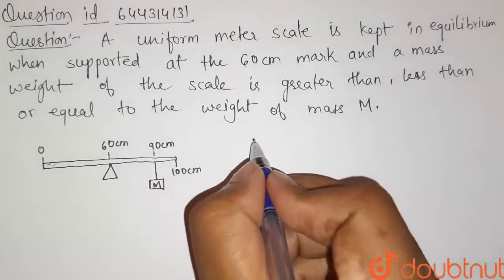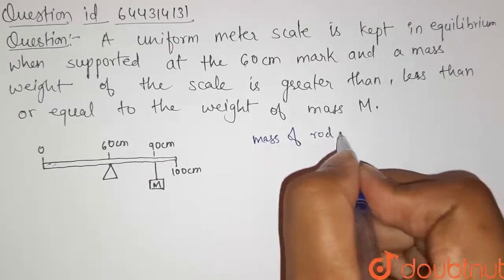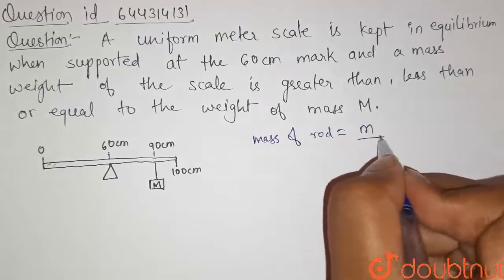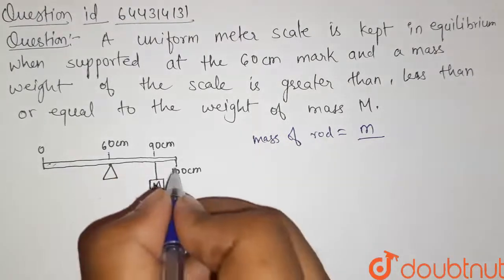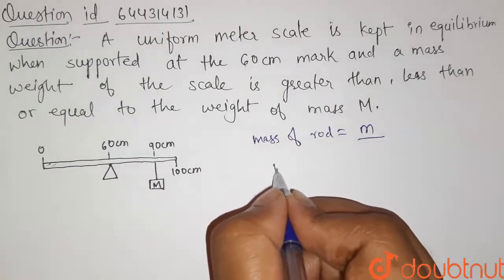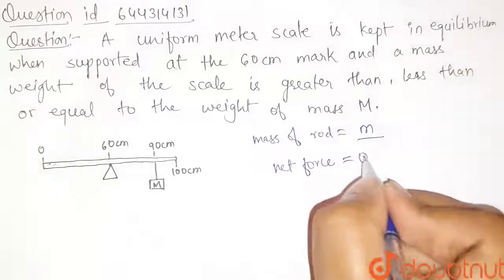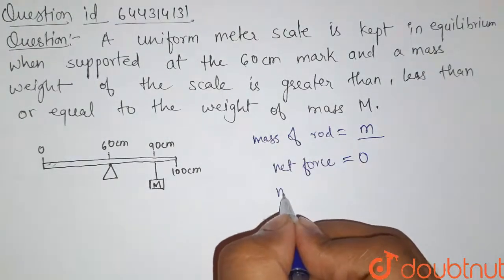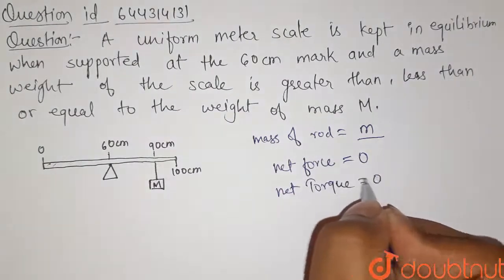So let us take the mass of this meter rod is equal to a small m. Now it is given that this rod is in equilibrium. So for equilibrium the net force must be equal to zero as well as net torque on this body must be equal to zero.